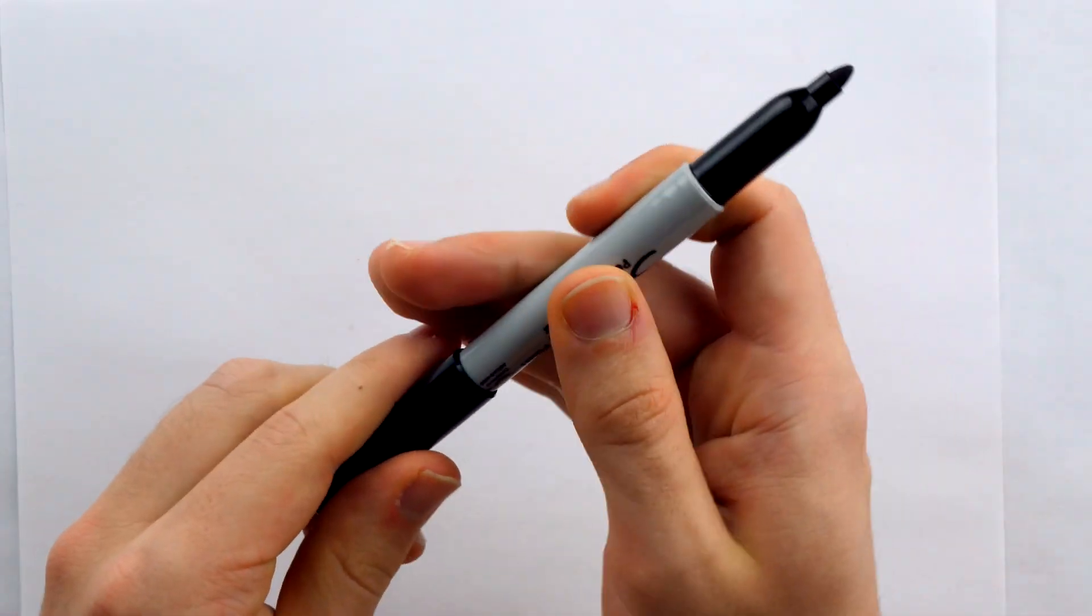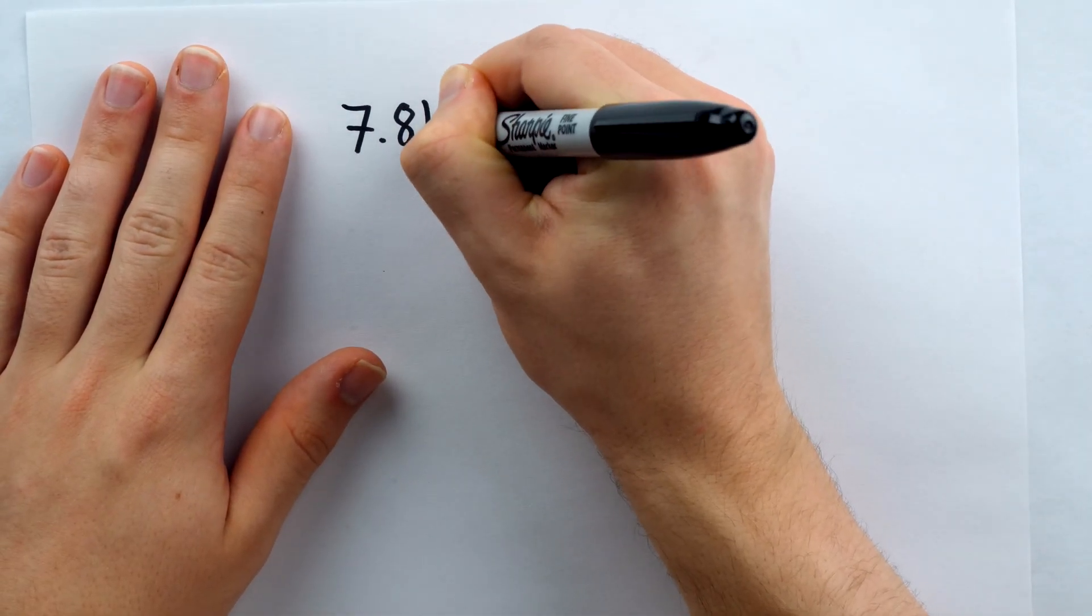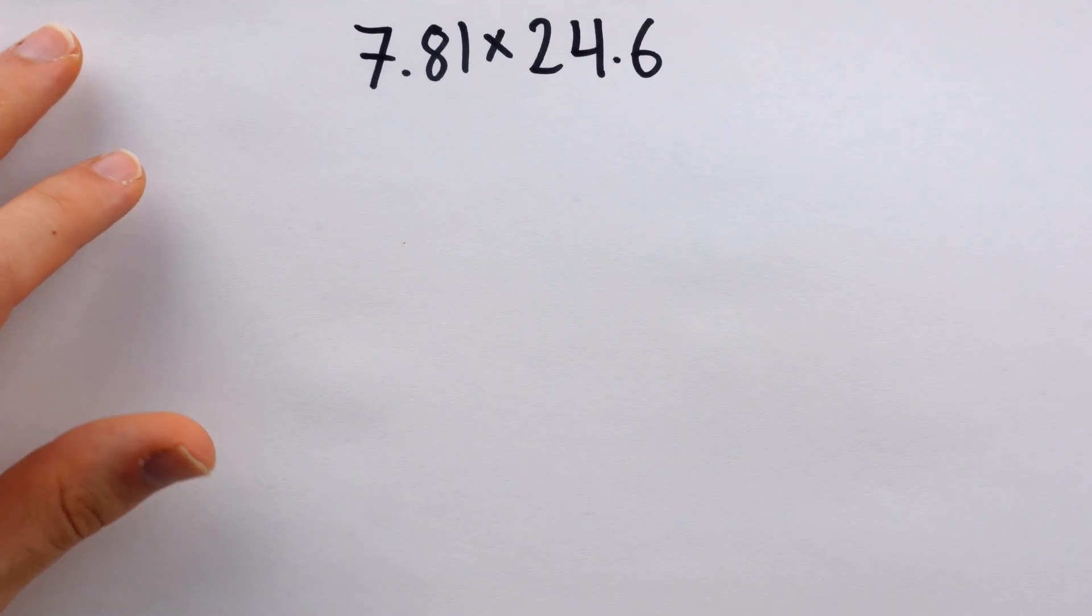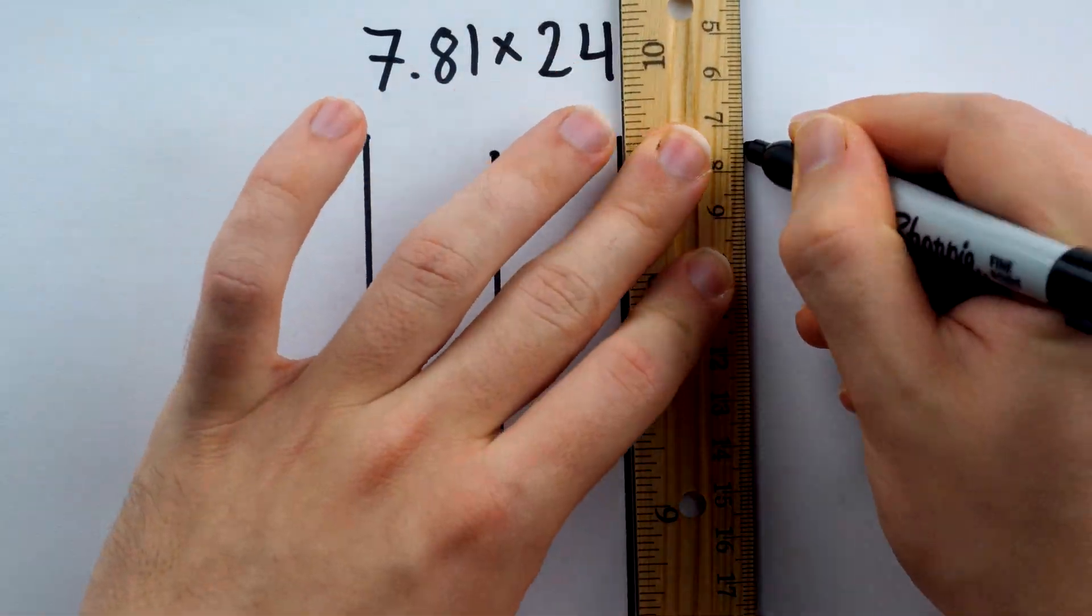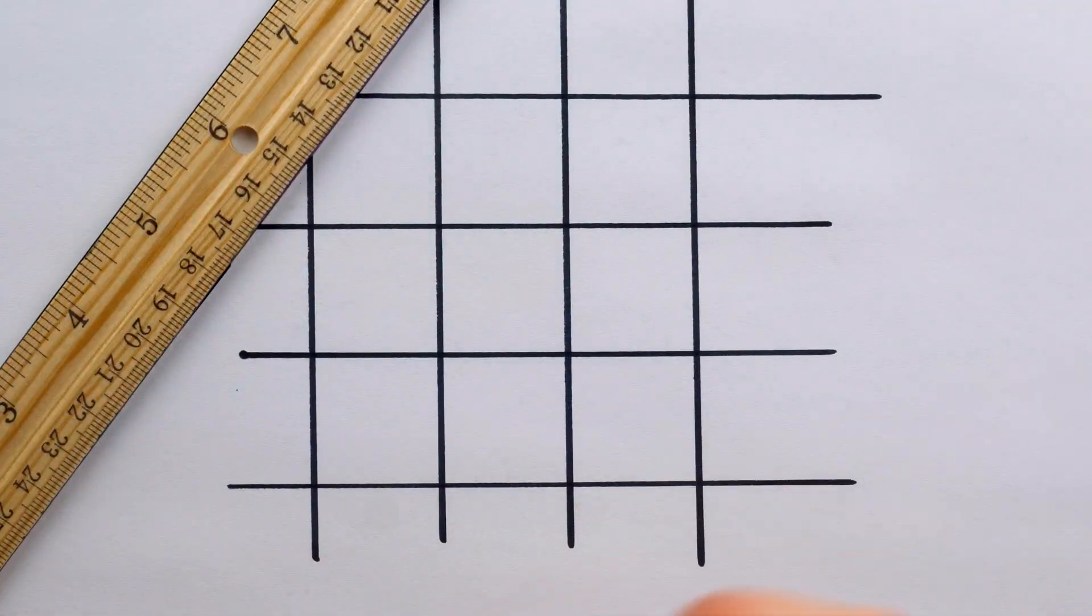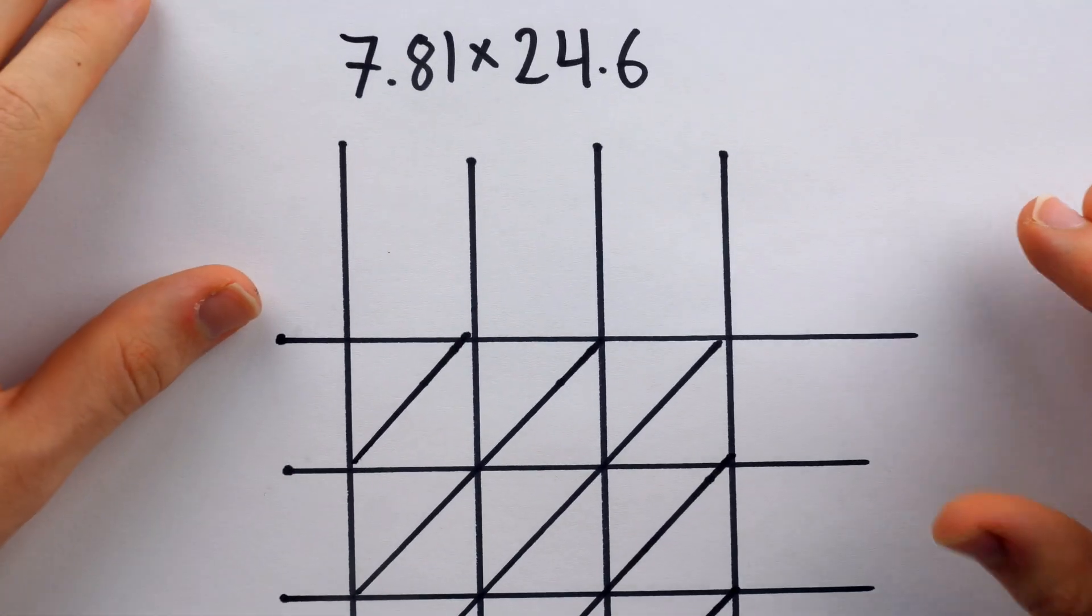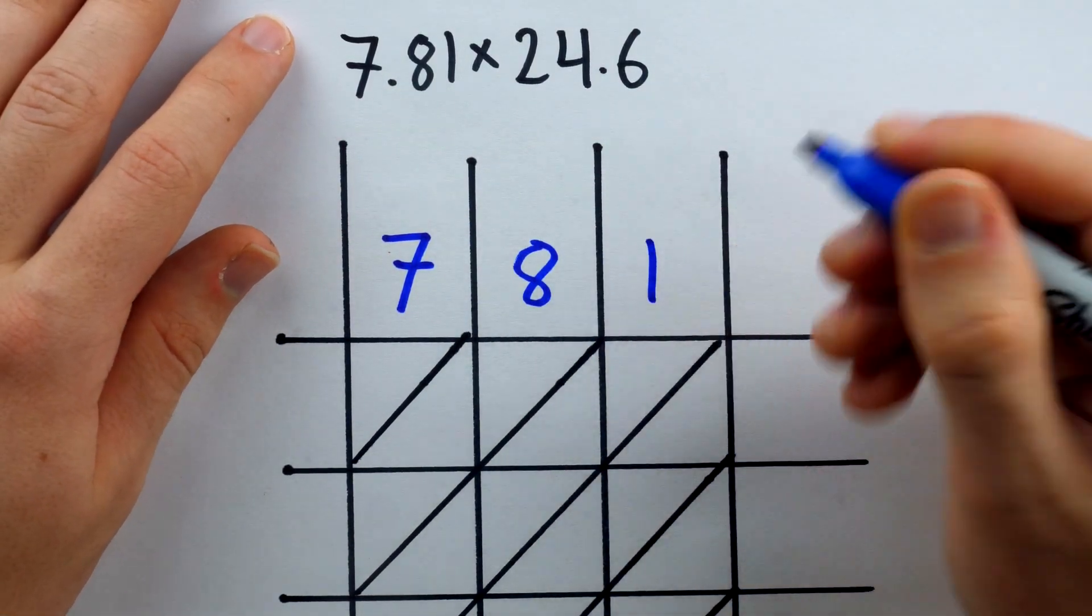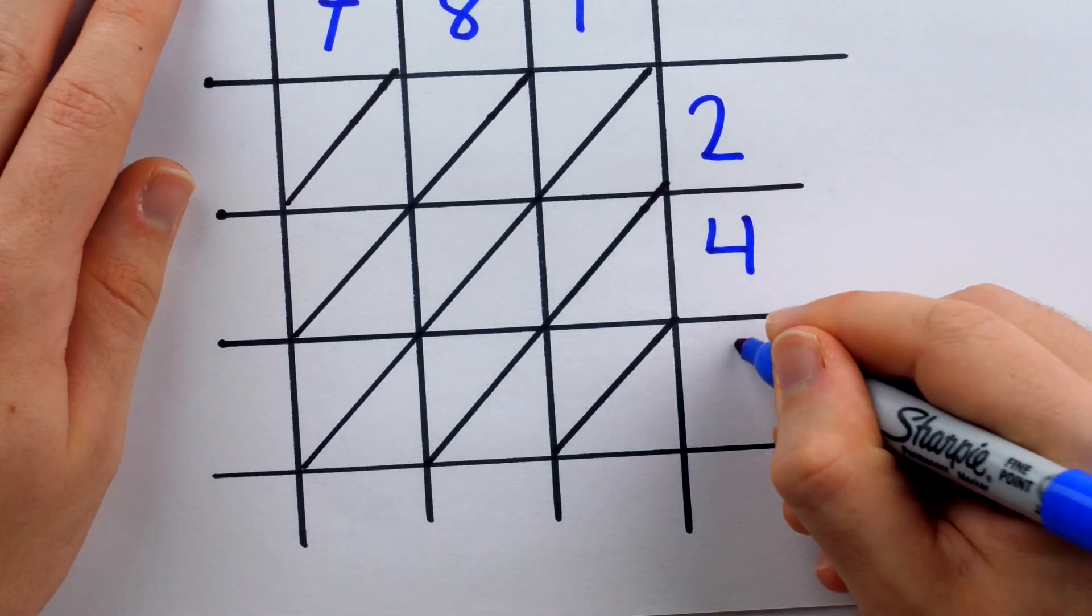The gelosia, or lattice method for multiplication, also works pretty slick when decimals are involved. Let's do a quick example of that. Let's say we're doing 7.81 and we're going to multiply this by 24.6. Again, I'll begin by drawing the window through which the jealous spouse peers. All right, I made that a bit lopsided. Let me go ahead and write the diagonals. Once we set up the lattice, we can write the numbers to be multiplied in the top and the right. As usual, we will ignore the decimal point until we get to our final answer, and then you'll see the very slick way in which we figure out where the decimal point should be placed.